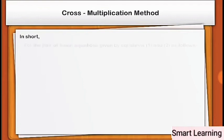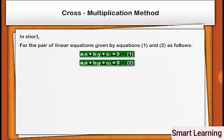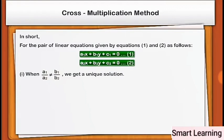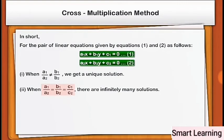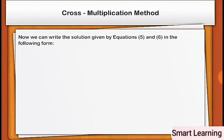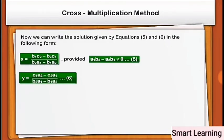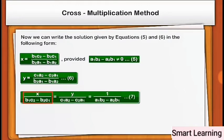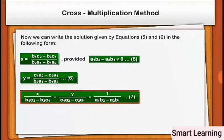Step 3: Substituting this value of x in equation 1 or 2, we get y = (c1·a2 − c2·a1) / (a1·b2 − a2·b1). In short, when a1/a2 ≠ b1/b2 we get a unique solution; when a1/a2 = b1/b2 = c1/c2 there are infinitely many solutions; and when a1/a2 = b1/b2 ≠ c1/c2 there is no solution. The solution can be written as: x / (b1·c2 − b2·c1) = y / (c1·a2 − c2·a1) = 1 / (a1·b2 − a2·b1).